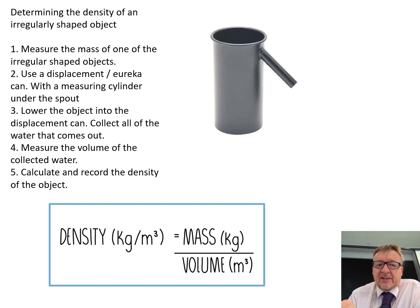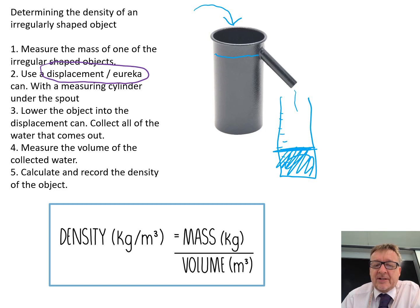What you do is you use this object here, which is called a displacement, or your Eureka can. Literally, what you do is you fill it with water up to the spout. You just pour it in until water starts coming out of the spout. Then you lower your object very carefully into the actual Eureka can, displacement can, and you then have a measuring cylinder underneath here. Any water that gets displaced, which is why it's called a displacement can, comes out and it fills this here. That then is the water that has been displaced.